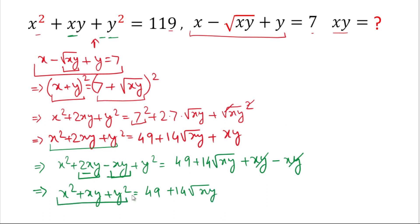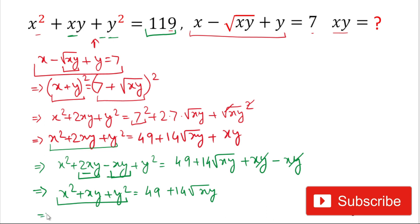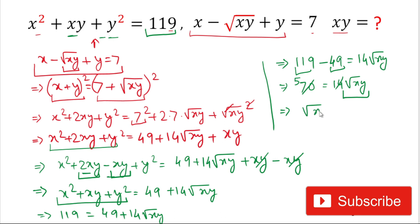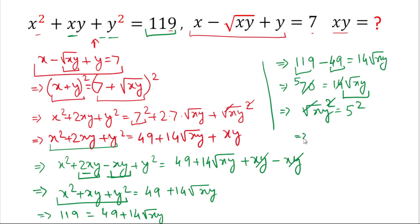This left hand side is now equation 1, whose value is 119. So we write 119 = 49 + 14√(xy). Subtracting 49 from both sides: 119 − 49 = 14√(xy), which gives 70 = 14√(xy). Dividing both sides by 14: √(xy) = 5. Squaring both sides, the square root cancels, so xy = 5² = 25. We have found that xy = 25.